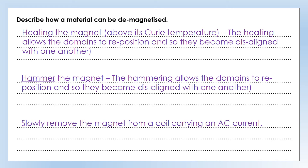The final demagnetization method uses an electromagnet with a coil carrying an AC current. On a current versus time graph, an alternating current's value and direction are constantly changing. If we slowly remove our magnet from such a coil, it lines up the domains in all different directions and the material becomes demagnetized.